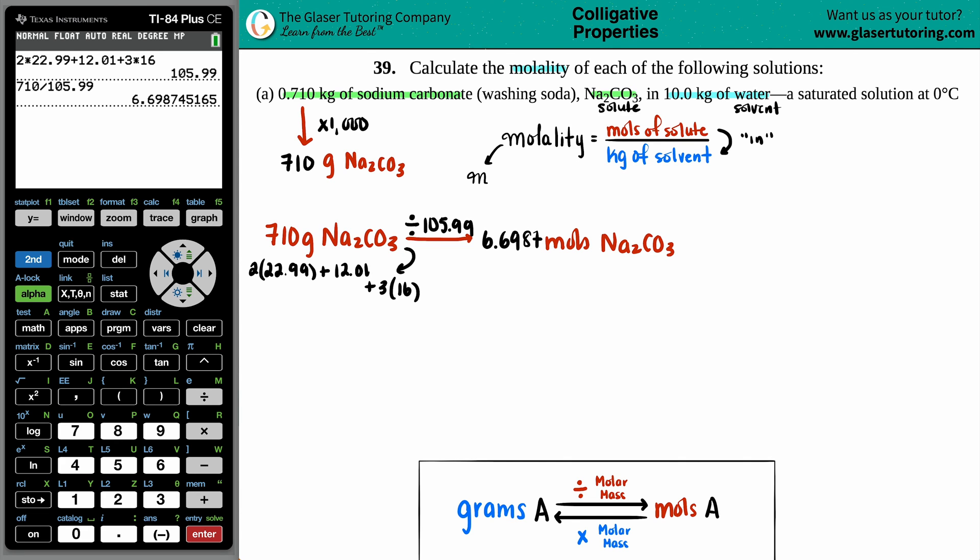Now, the solvent, or actually the solute is done. I have it in moles. The denominator, in order to find the molality, I need kilograms of the solvent. But it's already in kilograms. So we're good with that. So we're ready to do the formula.